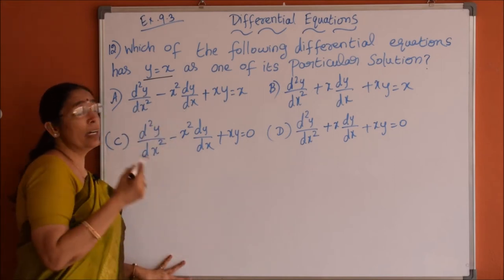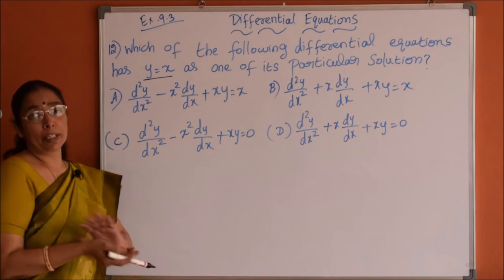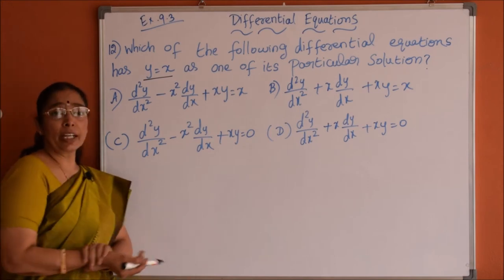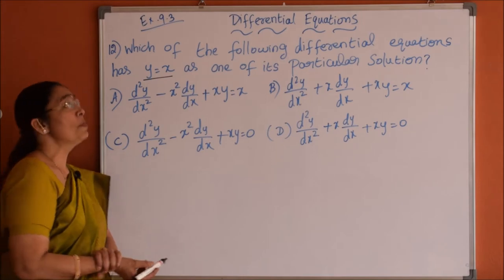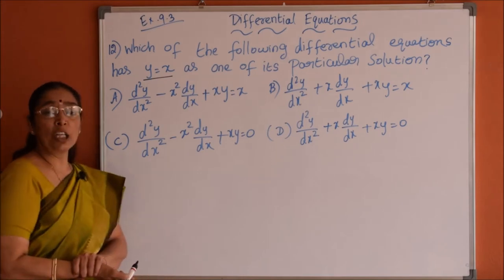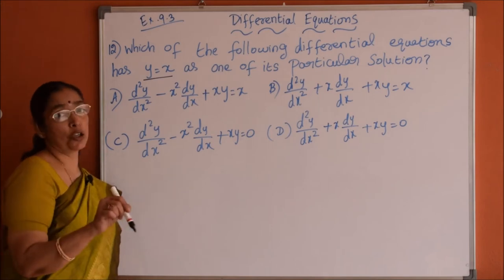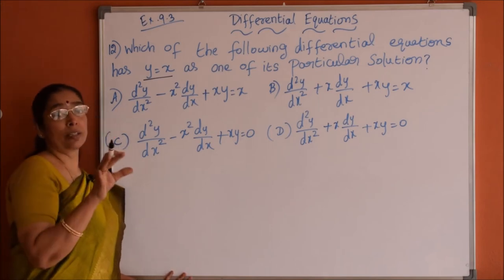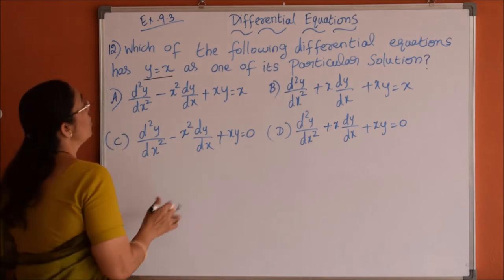We already learned the difference between particular solution and general solution. General solution may have a constant term. We find the constant term value with the help of given information to get the particular solution. General solution will give generally the family of circles, family of any curves.